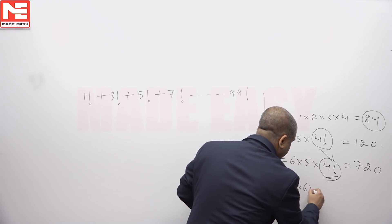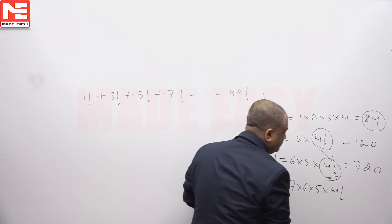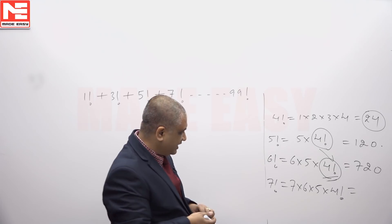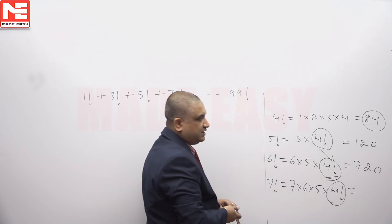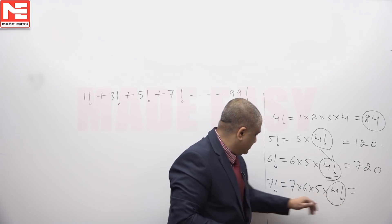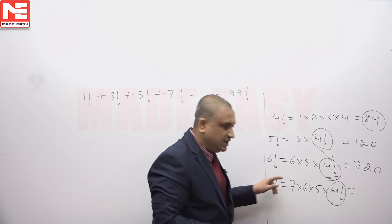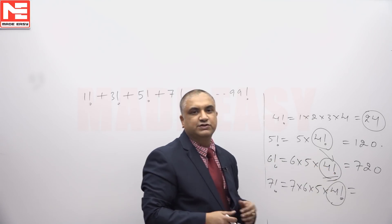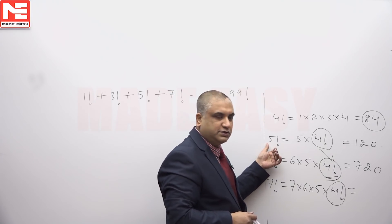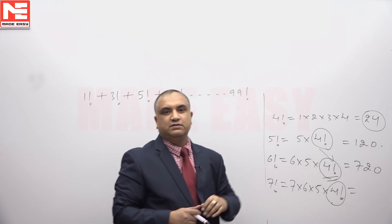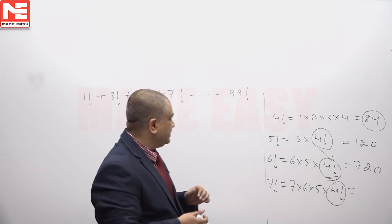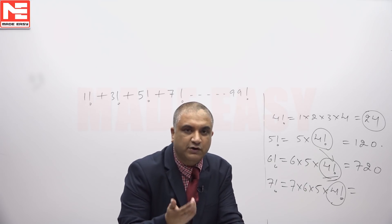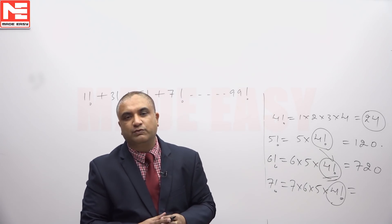7! = 7 × 6 × 5 × 4!, the value 5040 is not required — it is a multiple of 24. 7! contains 4! in it, so it is a multiple of 24. Similarly, 6! contains 4! and 5! also contains 4!, so every factorial from 4! itself and beyond is a multiple of 24.